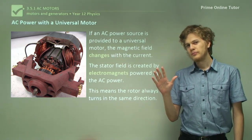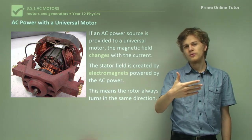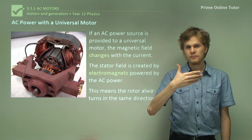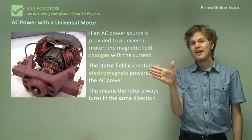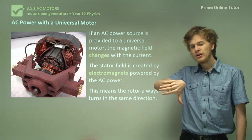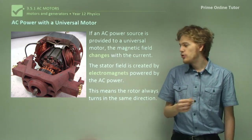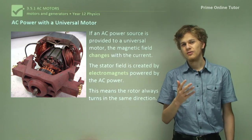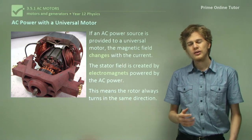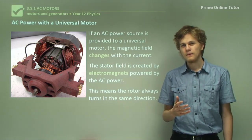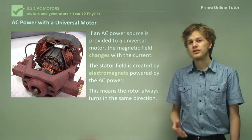Let's look at the right-hand rule. If the magnetic field is pointing in this direction and the current is going up, then the force on the rotor will be in this direction. If we reverse the direction of the magnetic field and the direction of the current, the force is in the same direction. So no matter which way current is flowing through the universal motor, we will always get the force on each part of the coil — or the torque on the entire coil — going in the same direction. By changing the direction of the current through the universal motor, we don't change the direction of the torque.